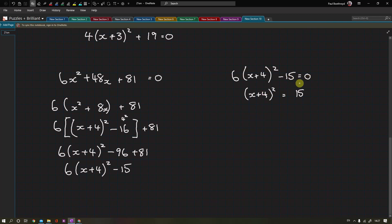So I'm adding 15 to both sides and then dividing by 6, and that's going to give me 5 over 2. Take the square root of both sides, so we've got (x+4) is the same as the square root of 5 over 2.